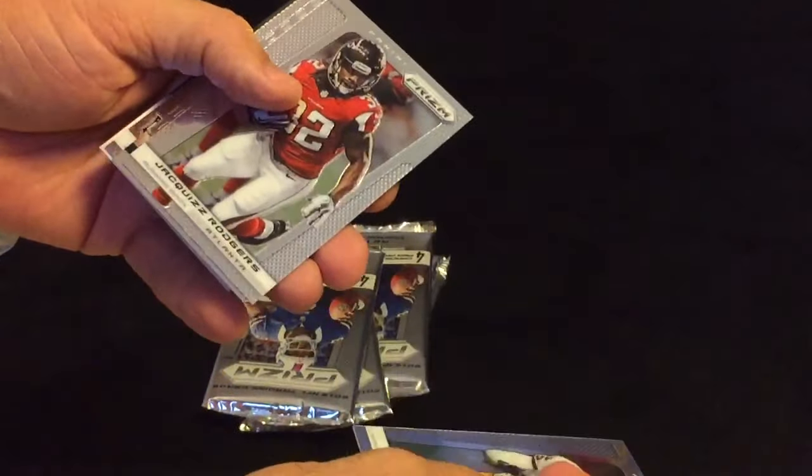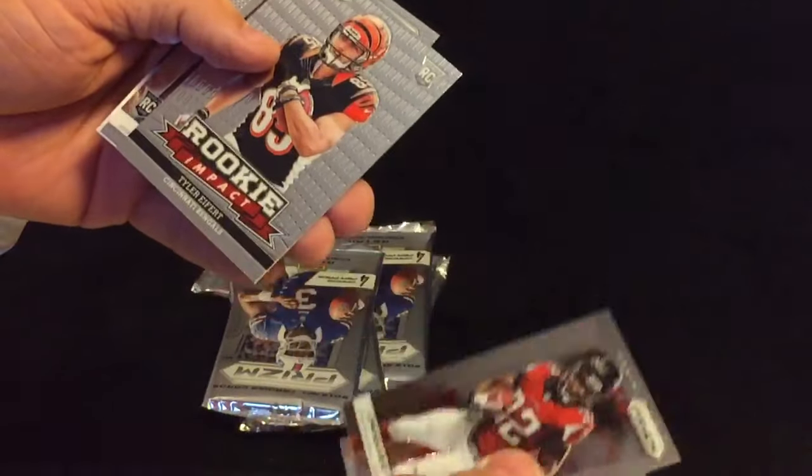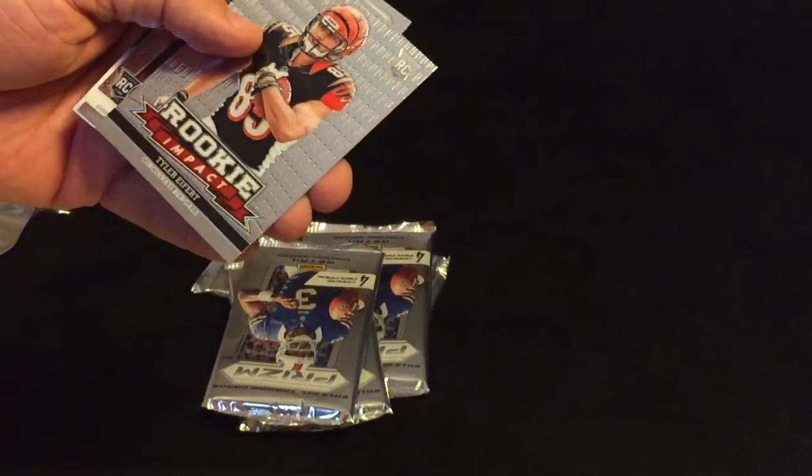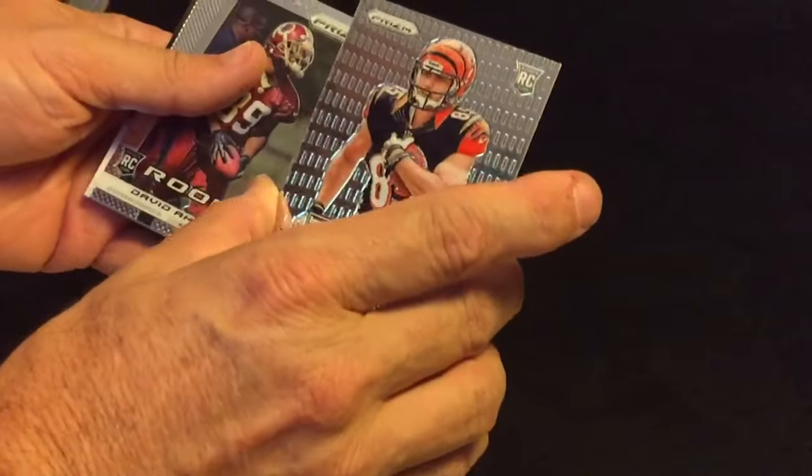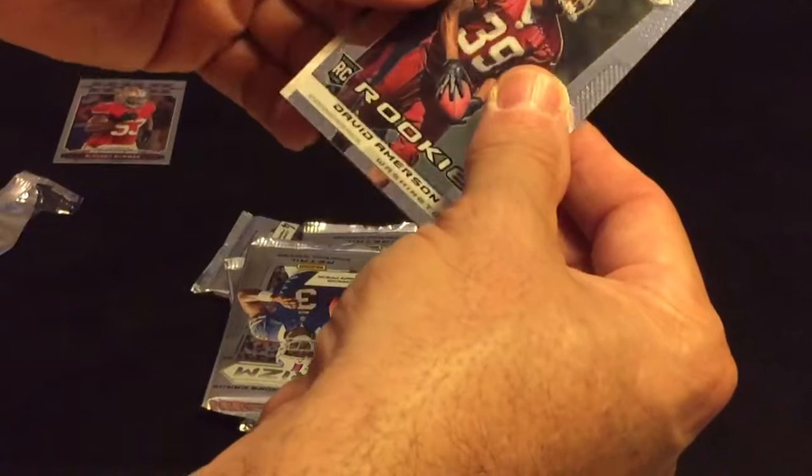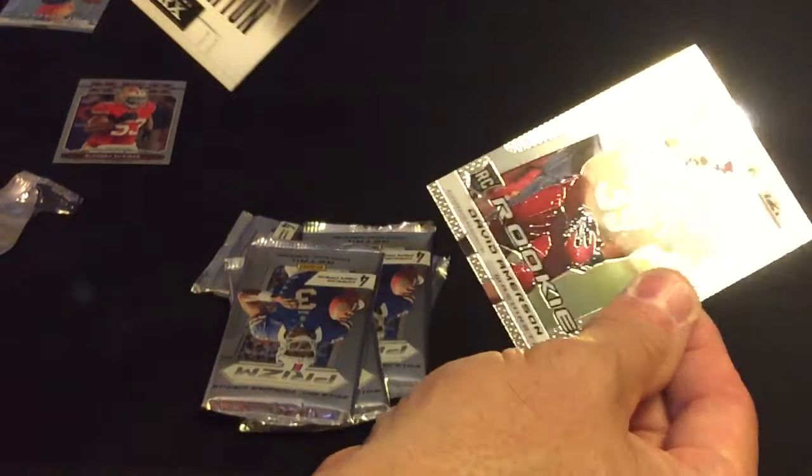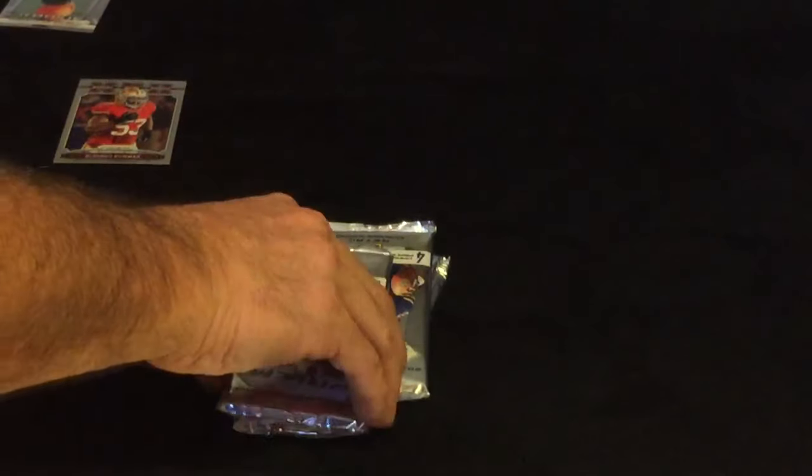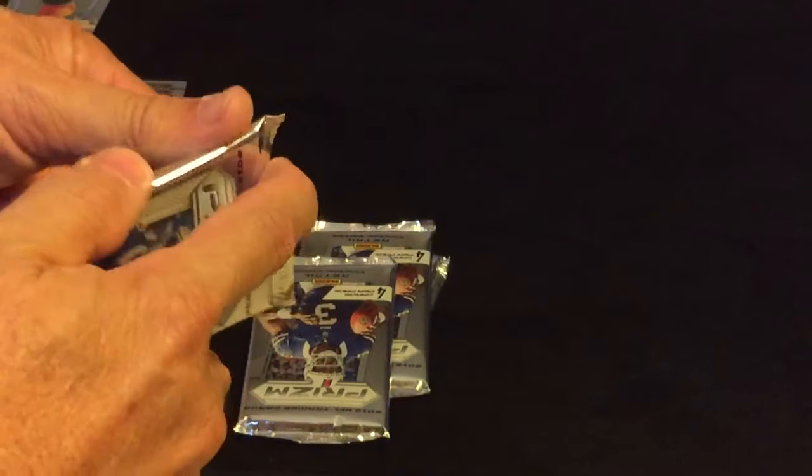Josh Morgan, Rodgers, Tyler Eifert. Rookie. Very cool. There's the rookies over there. And David Amerson rookie and Quentin Patton. Rookie. But it's in those subsets.